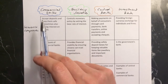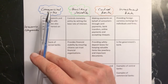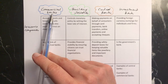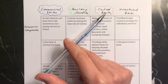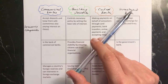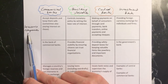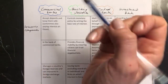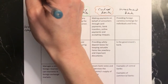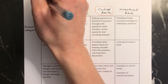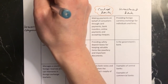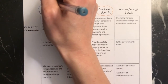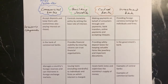The main financial institutions are commercial banks — they're sometimes called retail banks — building societies, central banks, and we also have investment banks and insurance companies. Some examples of commercial banks would be HSBC or Santander, which you would have heard of.